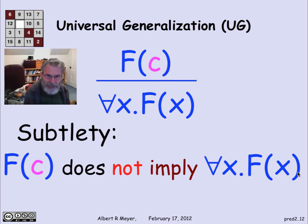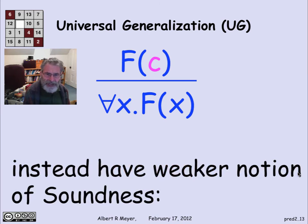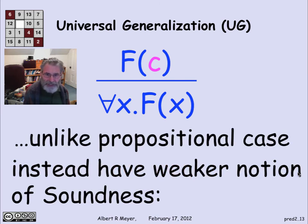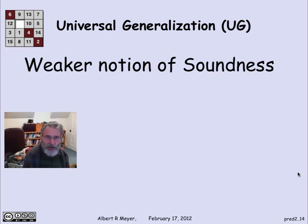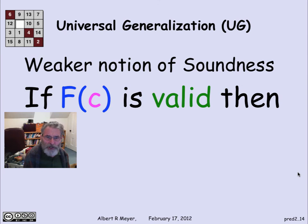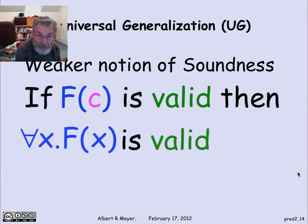But still, this was a sound rule. And the soundness is a slightly weaker notion, namely that in contrast to the propositional case, the notion of soundness that we're going to use is that if f of c is valid, then it's safe to conclude for all x, f of x is valid too. And this is consistent with standard mathematical usage.